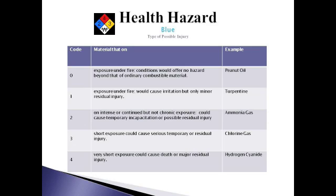Each color has a coordinating criteria table to help determine what the numbers stand for. This table is for the blue area. The code ranges from 0 to 4 on the left side of the table; the criteria are in the middle and an example is on the far right column. You can see from the table that peanut oil is not hazardous to health when fire is present and is given a code of 0 on the blue diamond. On the other end of the spectrum, hydrogen cyanide is capable of causing death in a very short exposure time when fire is present, so it would be coded 4 in the blue section.